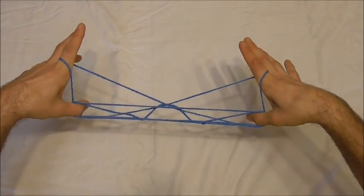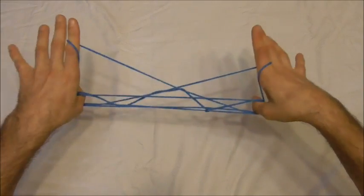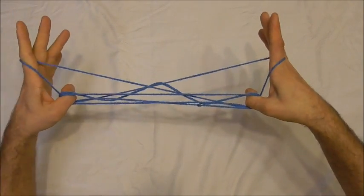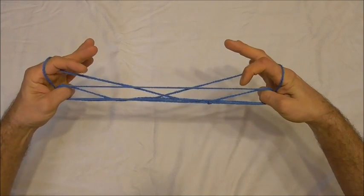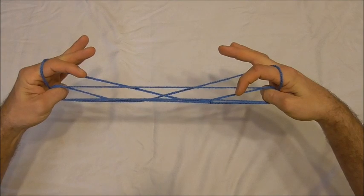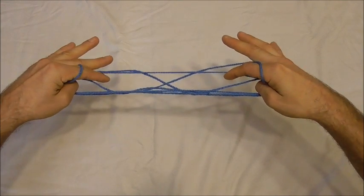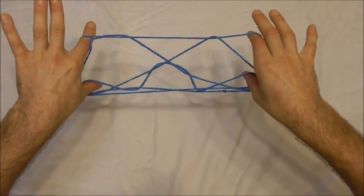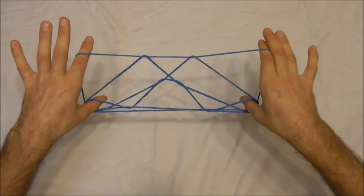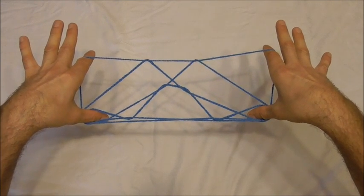You should notice that straight string here running in the middle. What I want to do is use my pointer fingers to go and push that straight string through the pointer finger loops. And then extend my hands and you should end up with the tunnel between two mountains string figure.